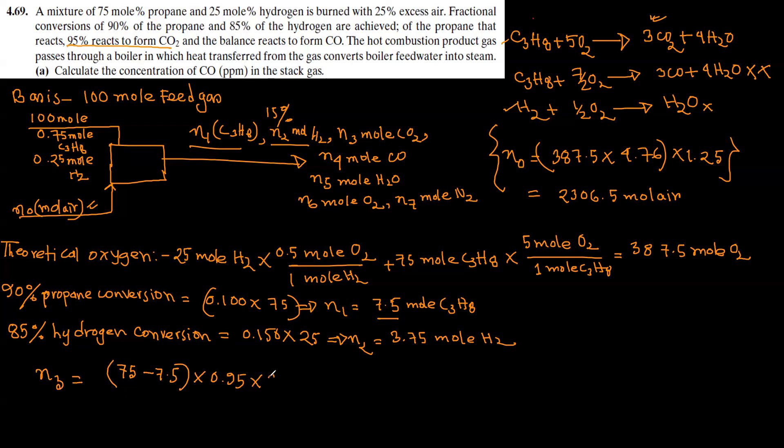C3H8 that reacted: 75 mol given, 7.5 mol remaining, so 67.5 reacted. So n3 is 0.95 times 67.5 times 3 mol CO2 per mol C3H8, which gives 192.375 mol carbon dioxide. Similarly, n4 is 67.5 times 0.05 times 3, giving 10.125 mol carbon monoxide.